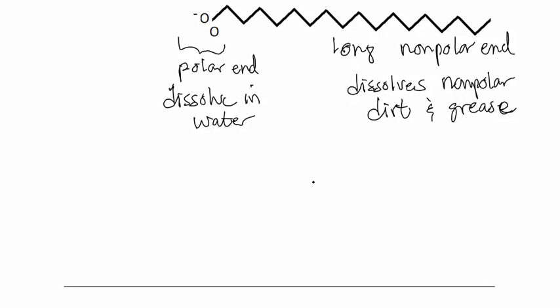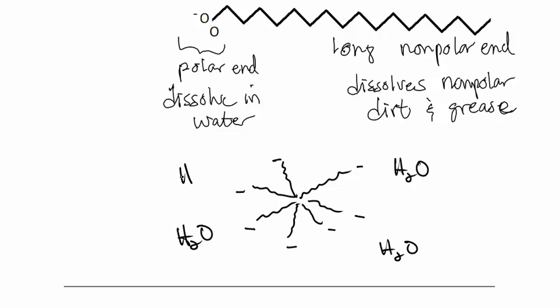So in water, it will actually line up so that all the zigzag ends, and I'll put a negative sign, are together in like a sphere. And the polar ends, which I'm marking with minus signs, are facing out to the water. So the oil and grease gets trapped inside this sphere of soap glob, and yet the outside can dissolve in the water so that you can wash it away. So the oil and grease is in the middle, the water is on the outside, all the way around it.